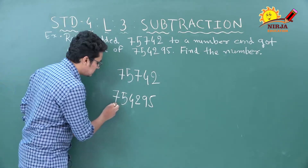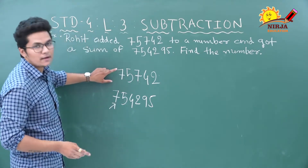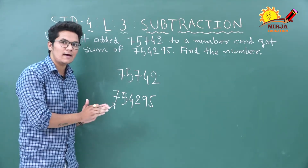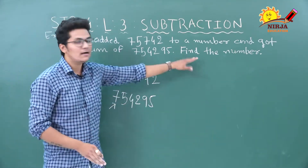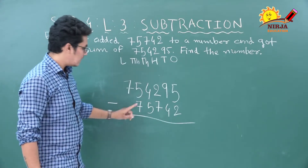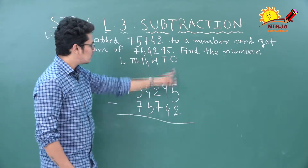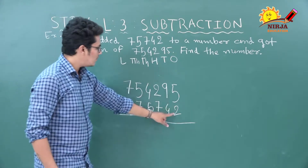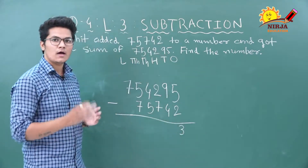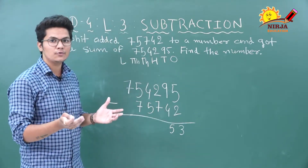Starting from the ones place: 5 minus 2 equals 3. Nine minus 4 equals 5. Hundreds place: 2 minus 7 is not possible as 2 is smaller than 7. So we will borrow from the thousands column. There are 4 thousands, so after borrowing 1 thousand, 3 thousands remain.